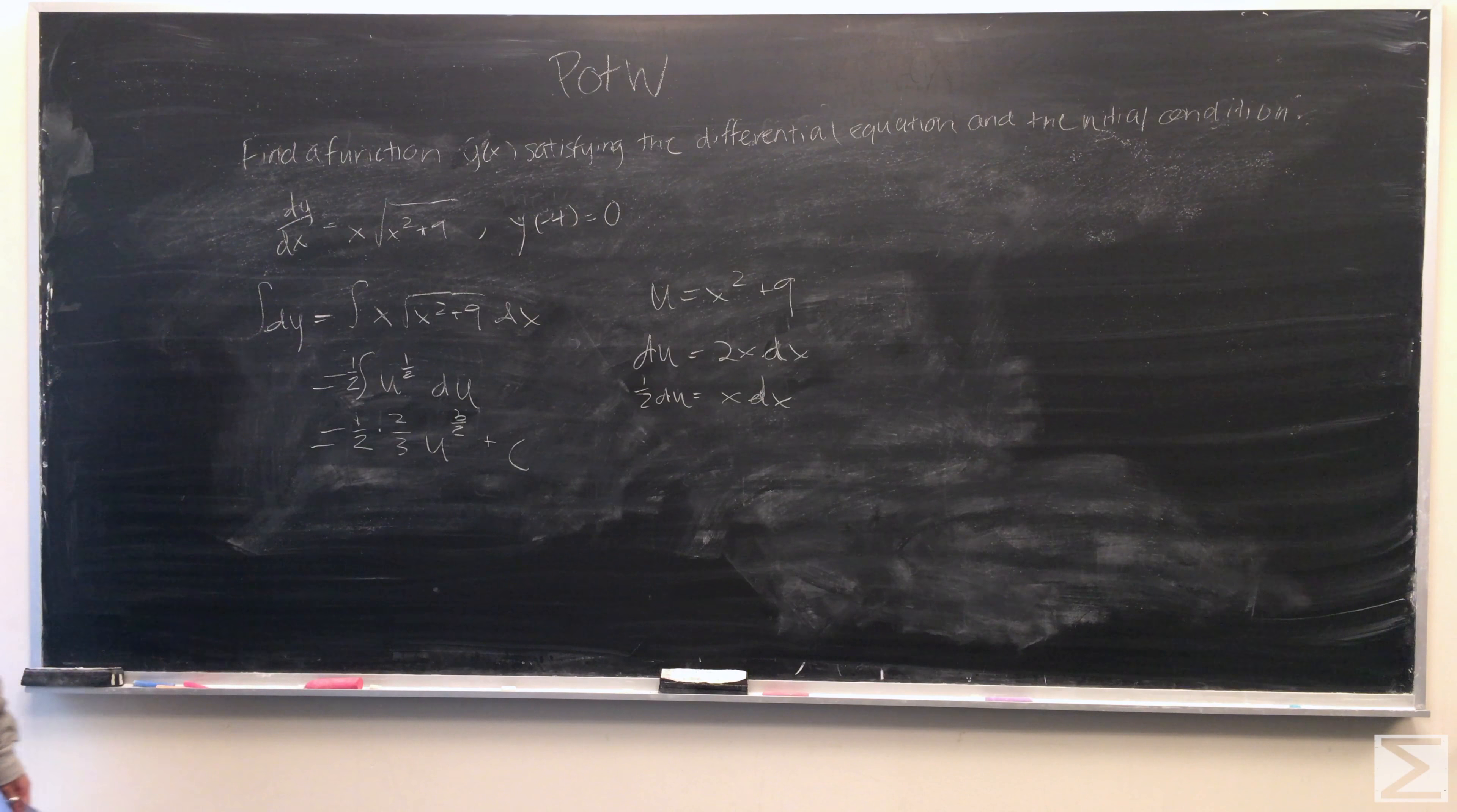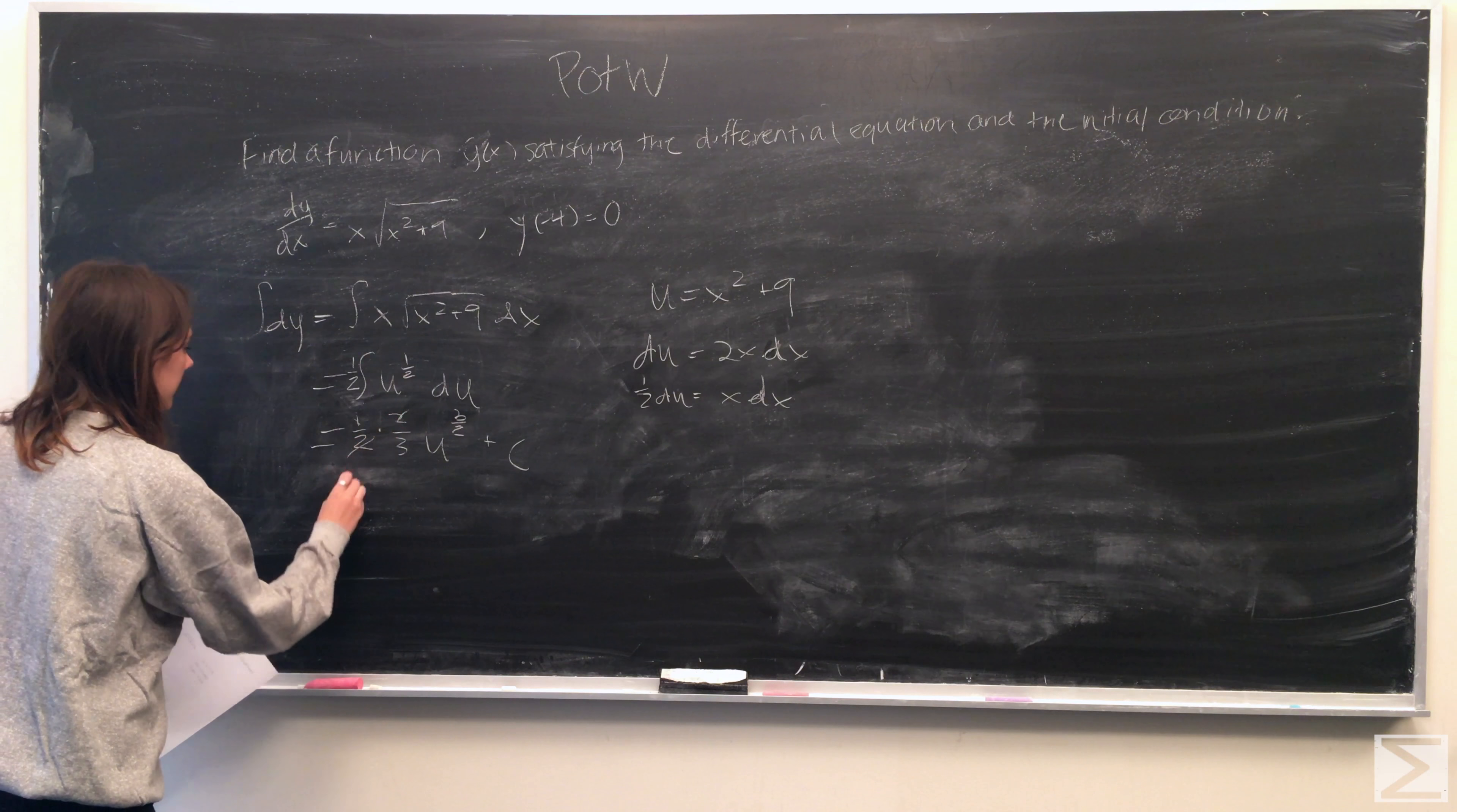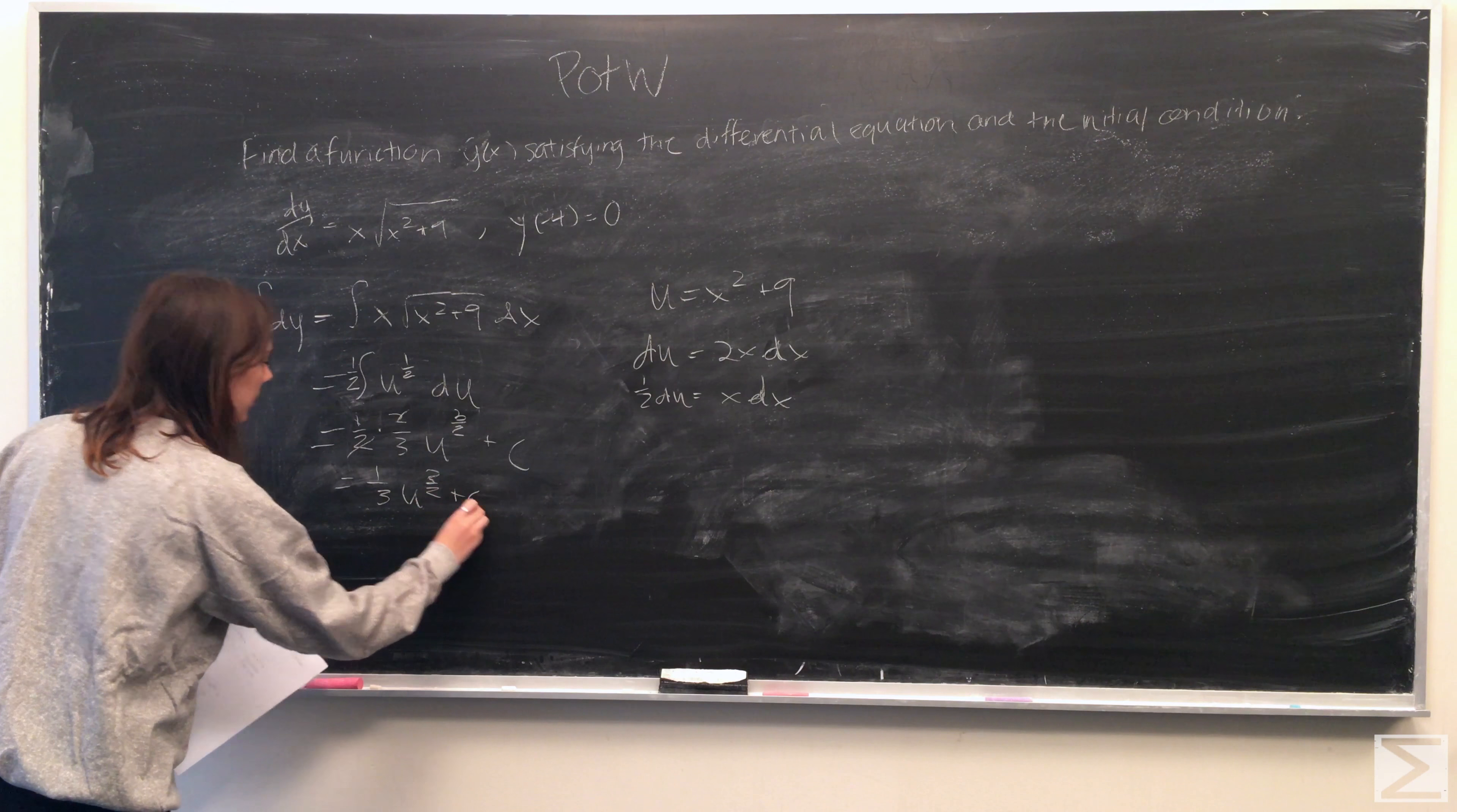We get 1 half times 2 over 3 u to the 3 over 2 plus c. And obviously, part of this cancels out and we're left with 1 third u to the 3 over 2 plus c.